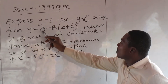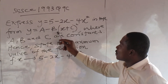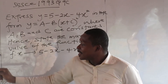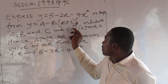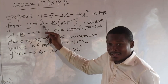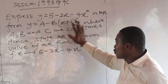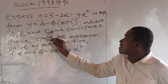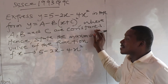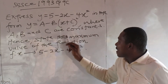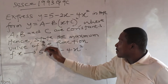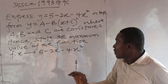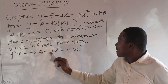Express this in the completed square form — you can see b is attached here and c is in this position. After you do it, I want you to leave your answer in the form where a, b, c are constants. The numbers can state the maximum value, meaning a maximum graph — if you draw it you have it right here — of the function.